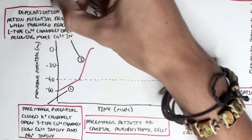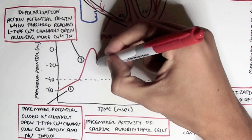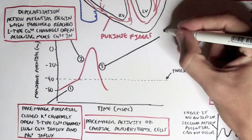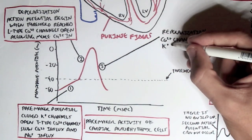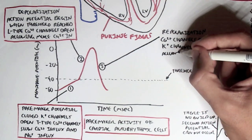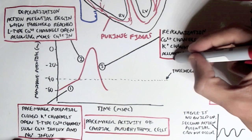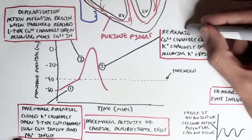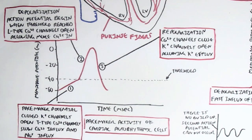Following depolarization, we have repolarization of the pacemaker cell, where both the L-type and T-type calcium ion channels close, but the potassium channels open up, allowing potassium ions to move from inside the cell to the outside, bringing the membrane potential back to negative 60 millivolts.